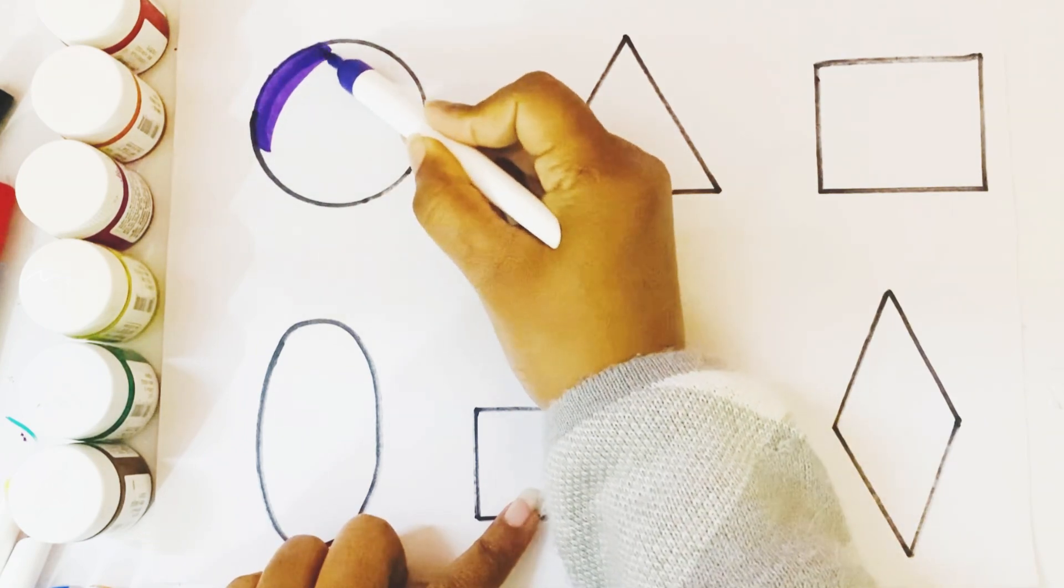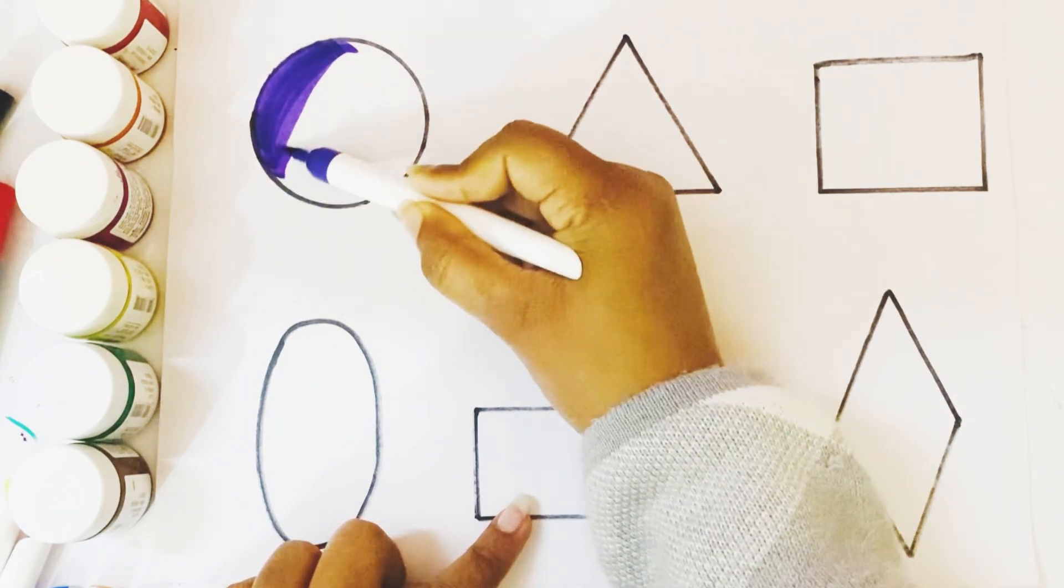Circle shape. Purple color. Which color kids? This is a purple color.